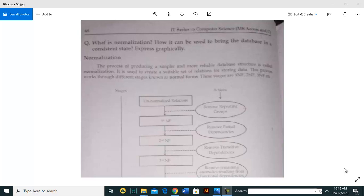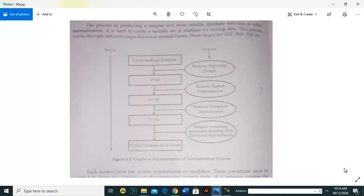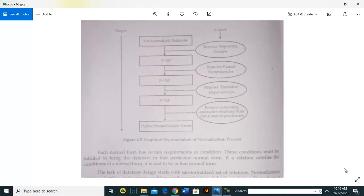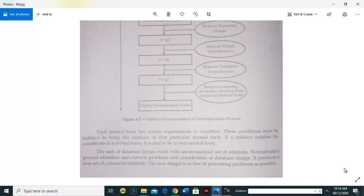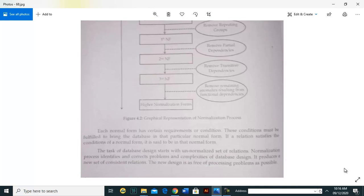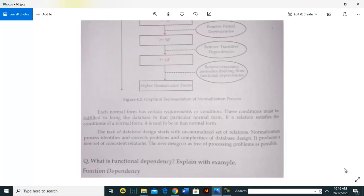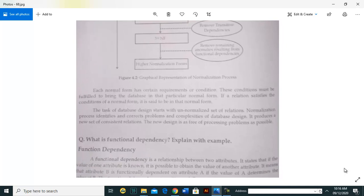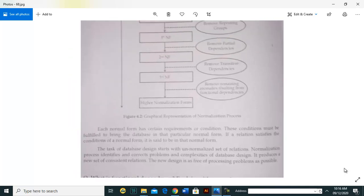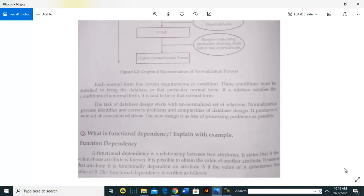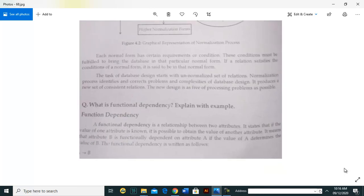We have seen different normalization types like first normal form, second normal form, third normal form and BCNF, fourth normal form, and fifth normal form. But in our syllabus, there are only three normal forms. We have seen what is functional dependency.